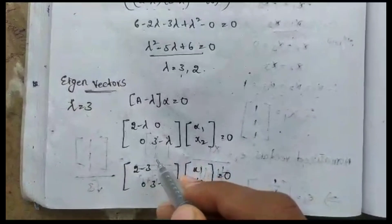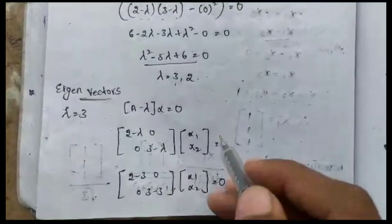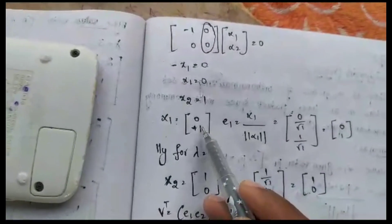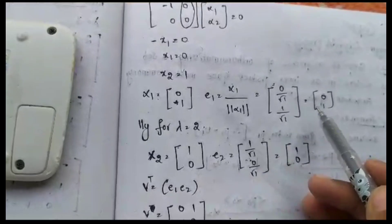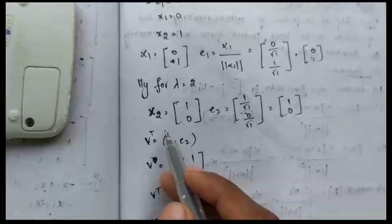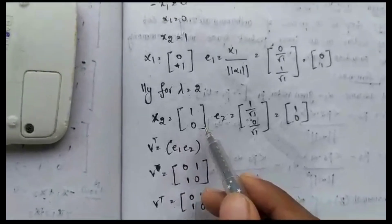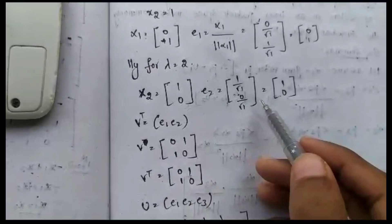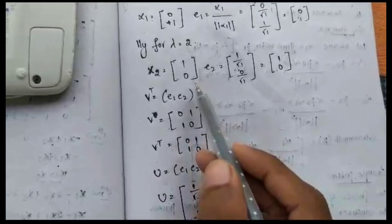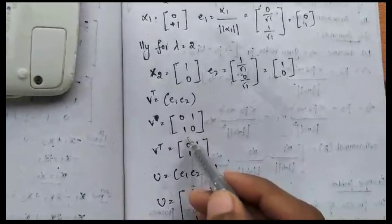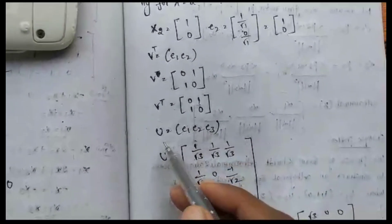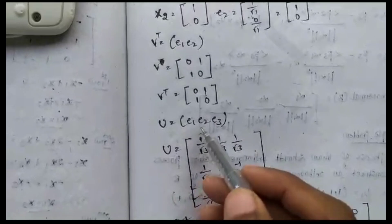We find the eigenvectors for Vᵀ using (A − λI)x = 0. For λ = 3 we get eigenvector x1 = [0, 1] and normalized vector e1 = [0, 1]. For λ = 2 we get eigenvector x2 = [1, 0] and normalized vector e2 = [1, 0].